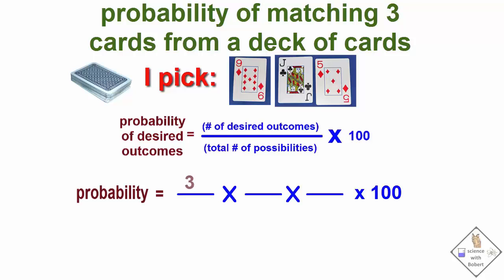The first choice, we have three desired outcomes with 52 cards in the deck.